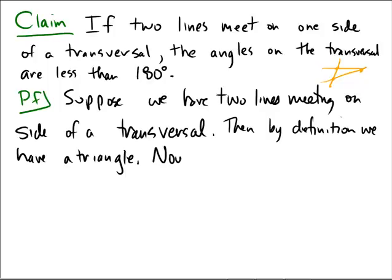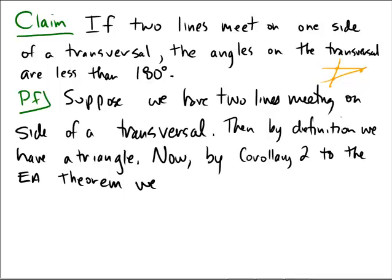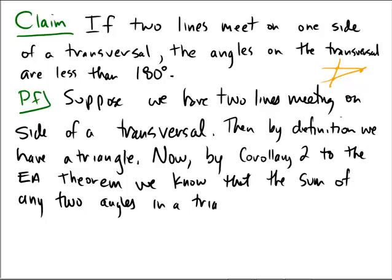Now, by corollary two, corollary two to the exterior angle theorem, we know that the sum of any two angles in a triangle is less than 180 degrees.